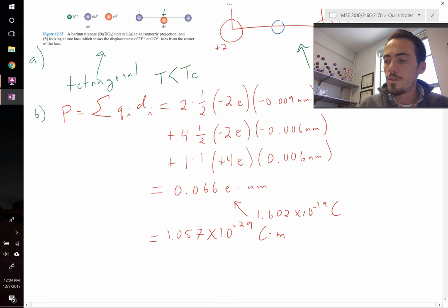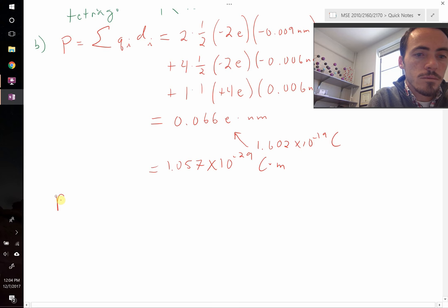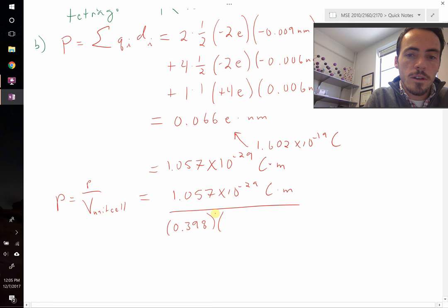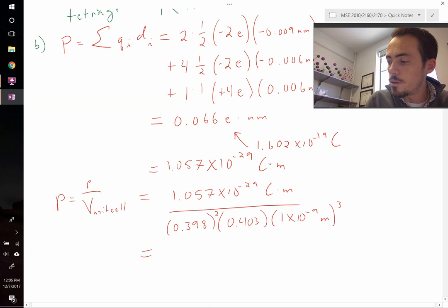What about the polarization per volume? Well, we know what the unit cell is, so we can just take, we can write the polarization is going to be the polarization from above divided by the volume of the unit cell. So let's go ahead and do so. It's going to be 1.057 times 10 to the negative 29 coulomb meters. We're going to divide this by, let's see, it's 0.398 nanometers. That's squared because two of the sides are the same, multiplied by 0.403 nanometers. Let's convert nanometers to meters. So 1 times 10 to the negative 9 meters, and that has to be cubed. When we plug all of that in, we find that our total polarization then on a per volume basis is going to be 0.165 coulomb per meter squared.